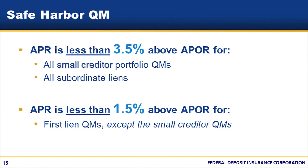In all other respects, the two are the same. As we explained earlier, this is one of the areas where small creditors were given special consideration by the CFPB under the rule. For all covered transactions issued by small creditors — both first and junior lien loans — and for junior lien loans originated by any creditor, a safe harbor QM is one with an APR that is less than 3.5% above the average prime offer rate, or APOR. First lien loans originated by creditors other than small creditors have a lower safe harbor QM threshold; they are safe harbor QMs if the APR is less than 1.5% above APOR.